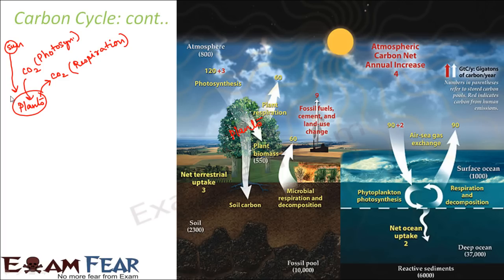Decomposers also add carbon dioxide to the soil. During the breakdown of dead and decomposed matter, decomposers fix carbon into the soil, because dead and decomposed matter contains a lot of carbon. That is how carbon reaches into the soil.